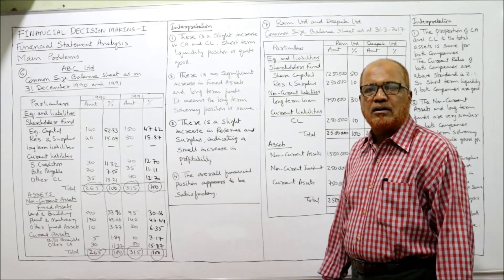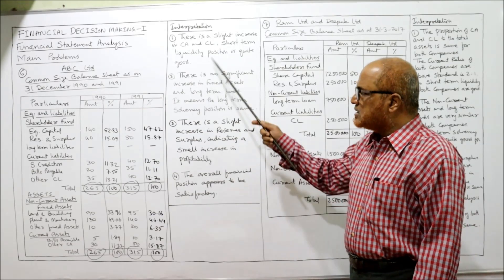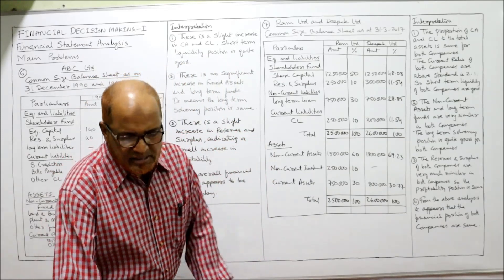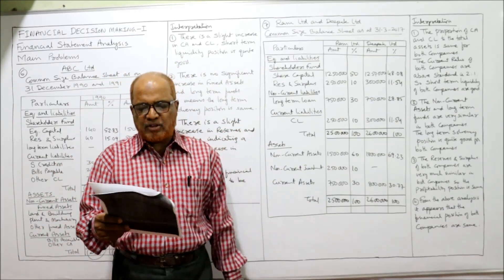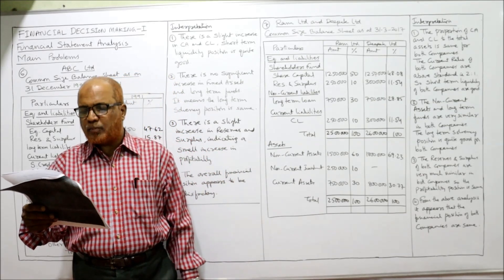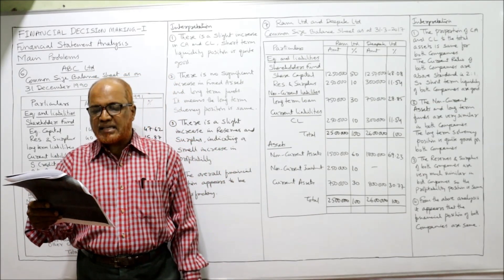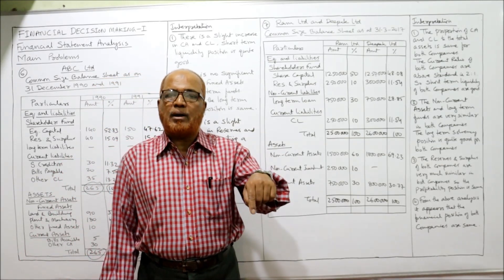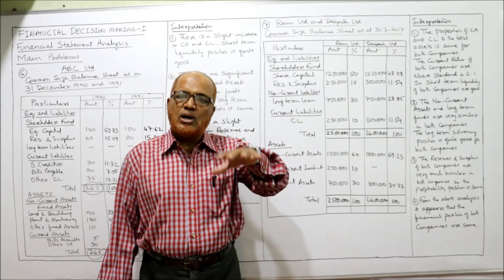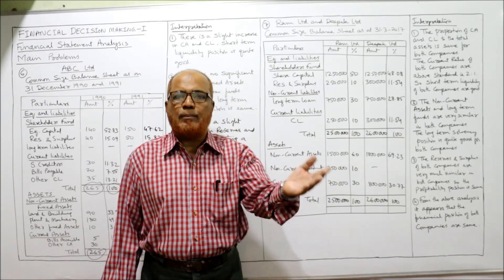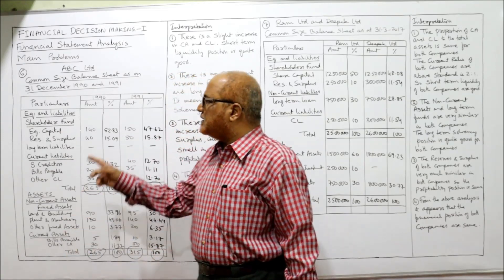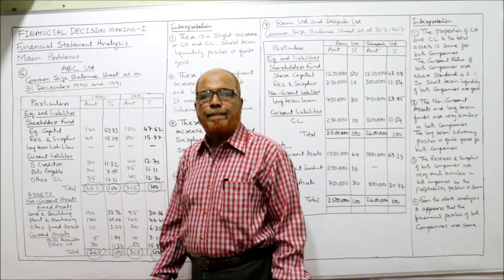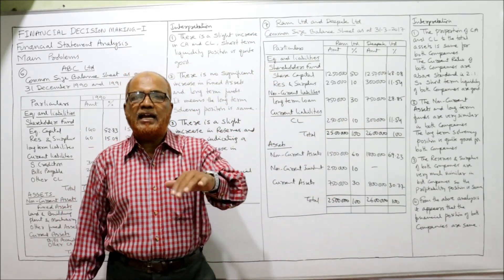The overall financial position appears to be satisfactory. That's the interpretation for the sixth problem. Now for the seventh problem: based on the information provided, comment on the financial position of Ram Limited and Deepak Limited as at 31st March 2017. The previous problem was intra-firm comparison — within the same firm, one year compared with another year, i.e., 1990 compared with 1991.